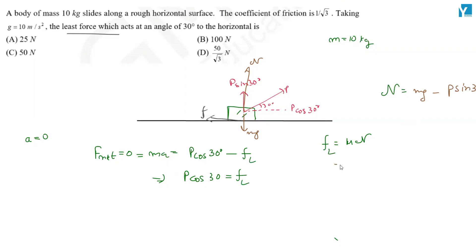So normal is equal to mg minus P sin 30 degrees. So this will be equal to mg minus P sin 30 degrees. We have P cos 30 degrees, root 3 by 2, is equal to mu into mg, 10 into 10,